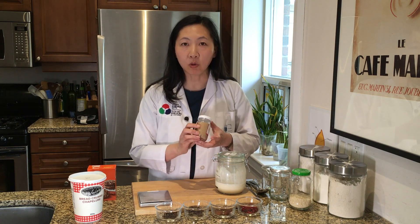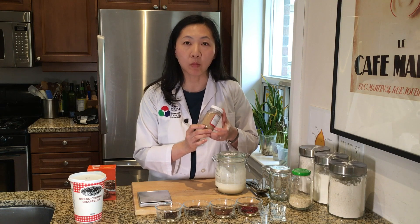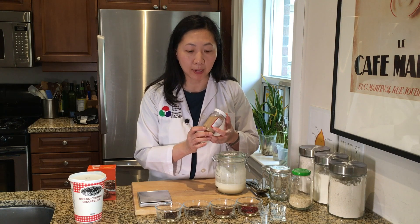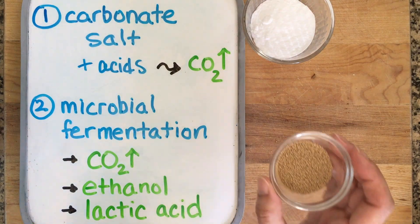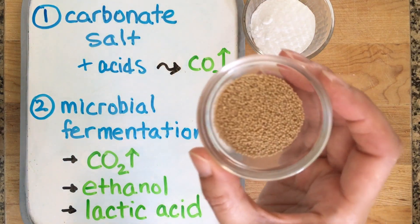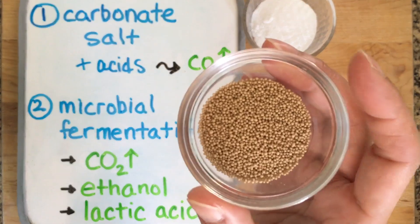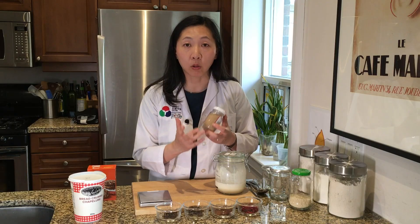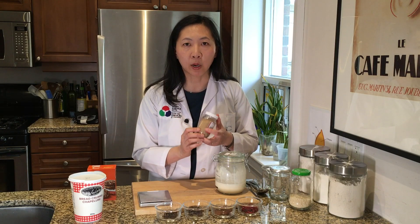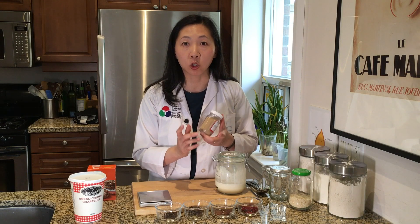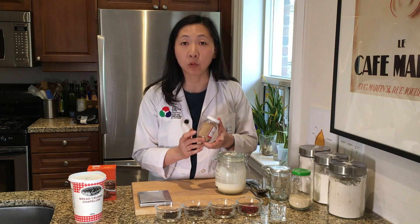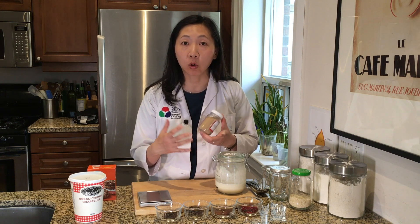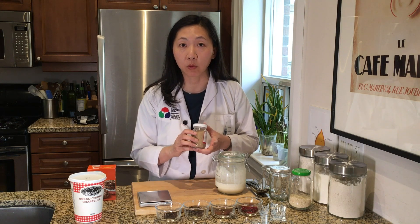Active dry yeast — probably what you're most familiar with when doing bread baking — is composed of strains of yeast that have been selected to generate a lot of carbon dioxide gas in a short amount of time, so that we have a relatively short rise period of the dough.